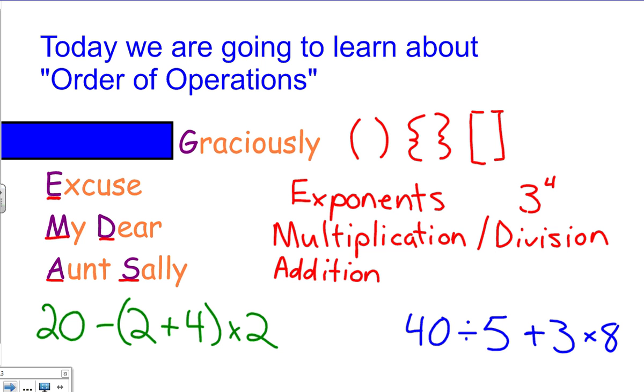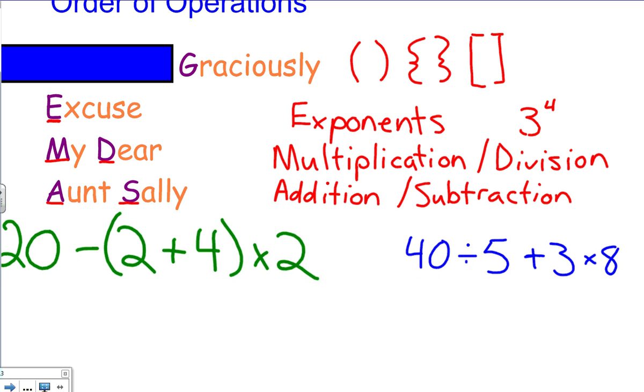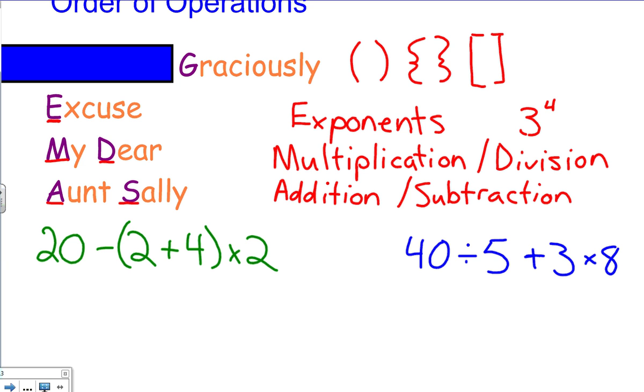So now we're going to look at a couple of examples. If we look at this example first, I hope you're all following the example in green. We notice that the first thing we should do is look for the G or the grouping symbols. Here we have grouping symbols—parentheses around 2 + 4—so we must do that part first, and then everything else will simply come down. So I'm going to move the × 2 down. I'm also going to move 20 minus down.